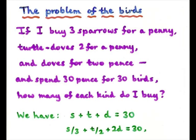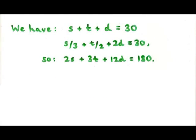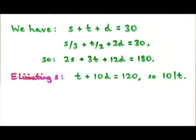We can get rid of one of the letters. I've cleared fractions by multiplying by 6, giving 2s plus 3t plus 12d equals 180. You can then eliminate s, and this tells you that t plus 10d equals 120.